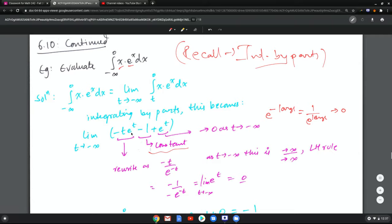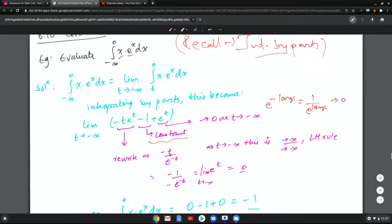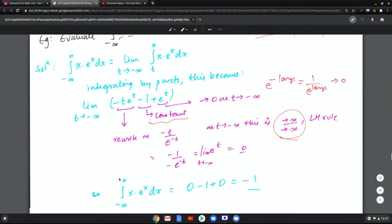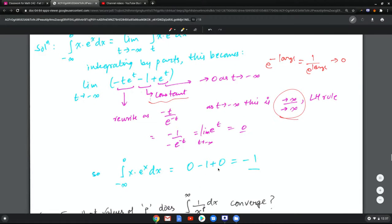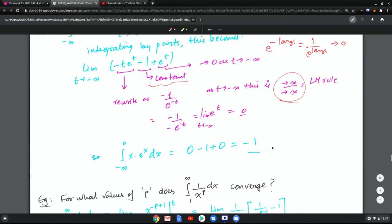Now what about negative t, e to the t? Or we can rewrite this as negative t divided by e to the negative t. This trick should remind you of L'Hôpital, and indeed that's why we did this because it's infinity over infinity. I can take derivatives and I end up with 0. So this integral is 0 minus 1 plus 0 which is negative 1.